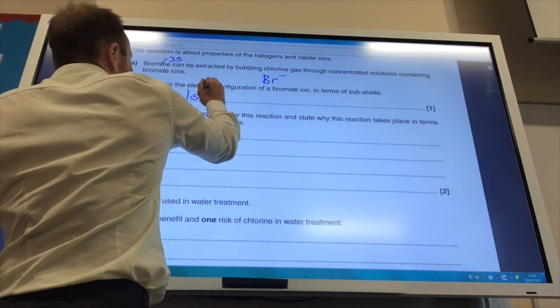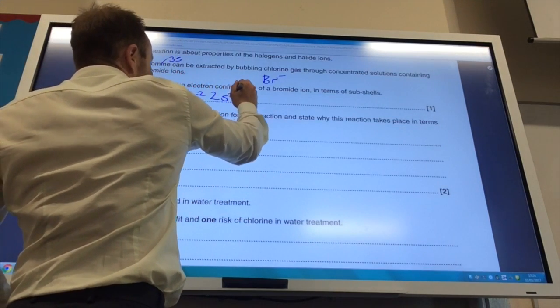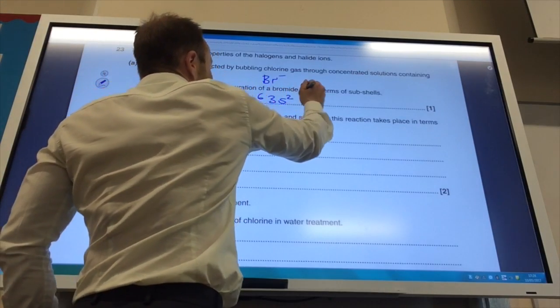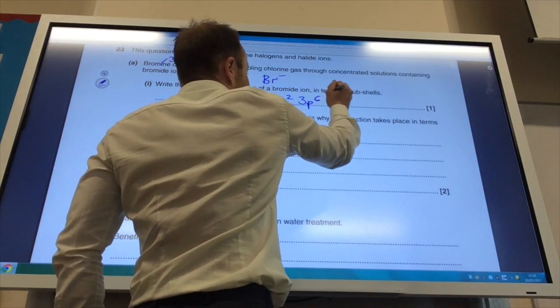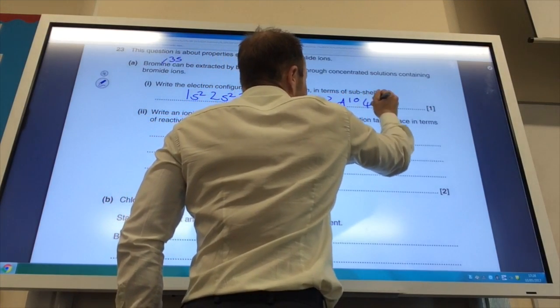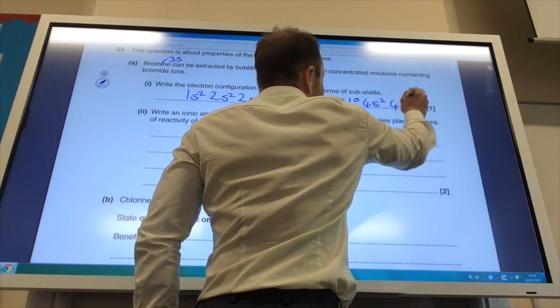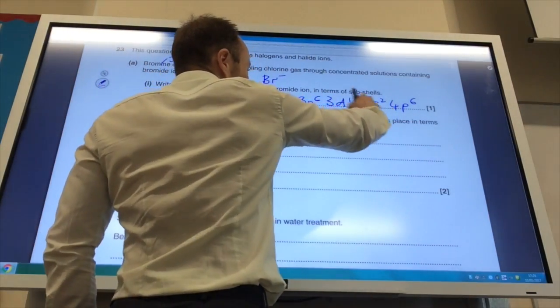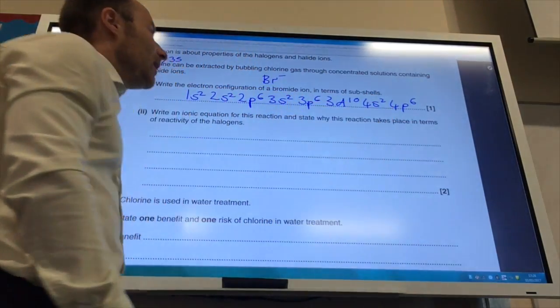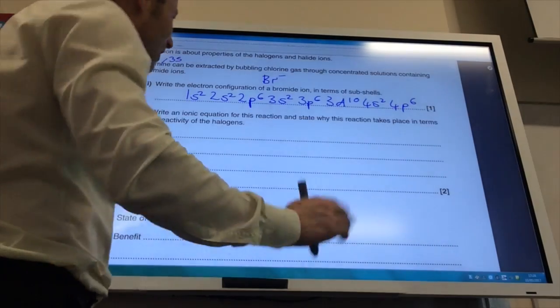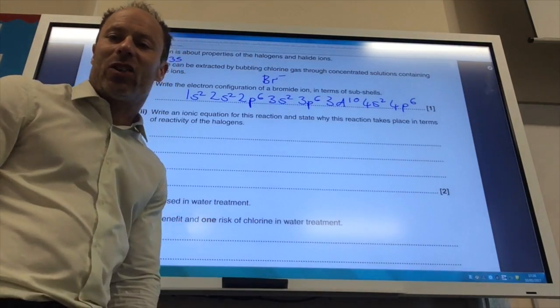So here we go, we're going to go 1s2, 2s2, 2p6, 3s2, 3p6, 3d10, 4s2, 4p6. It doesn't matter if you've swapped those two over because obviously they do fill in the opposite order, but that just keeps all the main shells together.